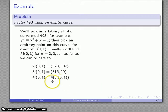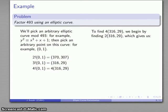4! is 4 times 3!, and I know what 3! is. I want to find this point (316,29). Now if I want to find this point using the fast powering algorithm, I start by finding 2(316,29). I have to calculate the slope. This is the slope of the tangent line, so that's 3x² + 1 over 2y. And I calculate that.